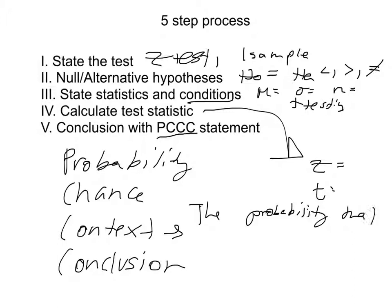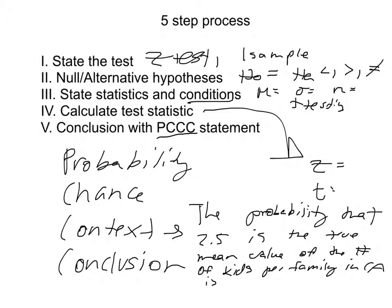that 2.5 is the true mean value of the number of kids per family in California is 0.01. Therefore, I can reject my null hypothesis. Because your 0.01 is, chances are, it's going to be lower than your 0.05 alpha.